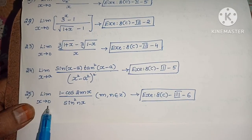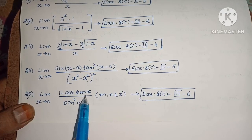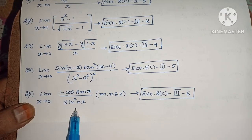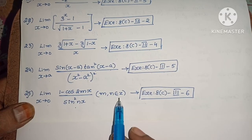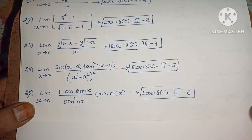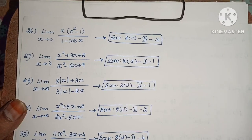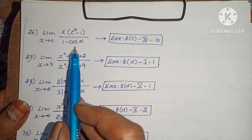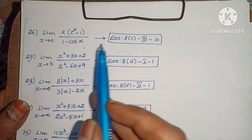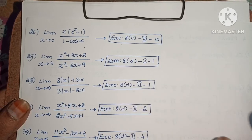Next: Limit extends to 0 of 1 minus cos 2mx by sin squared nx, where m and n belong to z. Exercise 8c, third roman law, sixth one. Next: Limit extends to 0 of x into e power x minus 1 by 1 minus cos x. Exercise 8c, third roman law, tenth one.